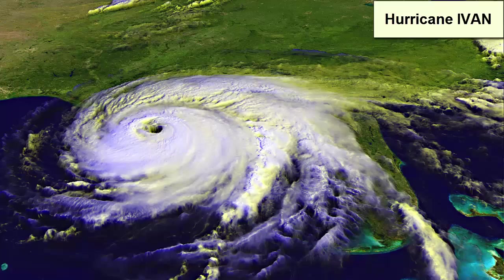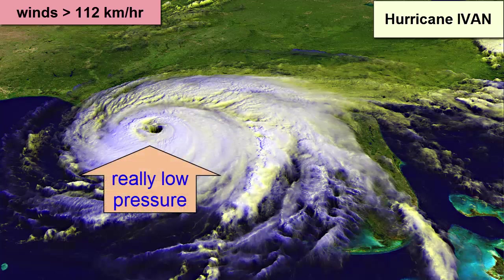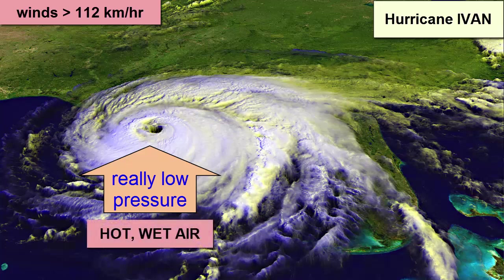What about hurricanes? By definition, a hurricane is a low-pressure tropical storm system in which the winds surpass speeds of 112 kilometers per hour. To get wind speeds this high we need a really large pressure difference, which means a really low pressure system — really low density, hot and wet air. That's why hurricanes form in the tropical oceans.